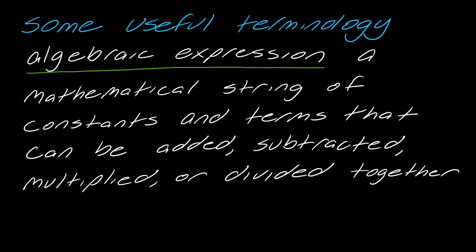And then finally, we have what is an algebraic expression. This is a mathematical string of constants and terms that can be added, subtracted, multiplied, or divided together. So an algebraic expression is literally just this. This whole thing is the algebraic expression. Just knowing what these terms are, they get used a lot in math, so you want to be familiar with what someone is referring to.